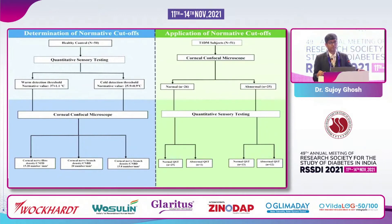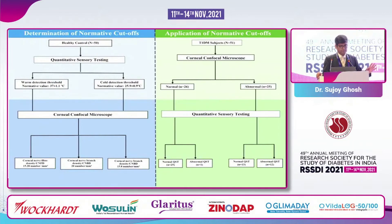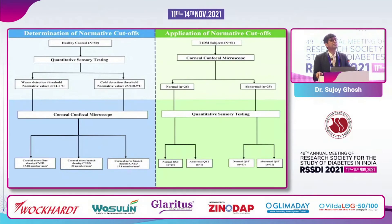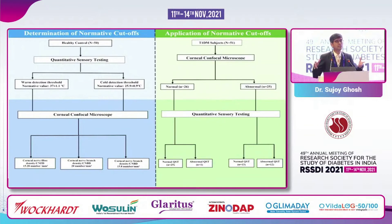We then went on to our cohort of type 1 diabetes patients and they underwent corneal confocal microscopy. We found that if you had a normal CCM, almost all other tests were normal — except one patient. So it told us: if CCM is normal, there is no need to do any other tests of neuropathy. But if CCM was abnormal, almost 50% of them were abnormal without any abnormalities on small fiber testing, telling us that these abnormalities precede any other possible ways of testing neuropathy in our population.